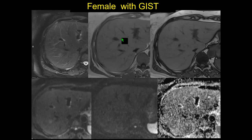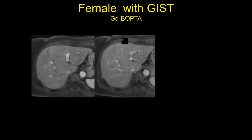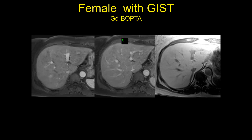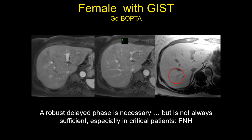A female with GIST had a lesion — not clearly seen on T2, without much restricted diffusion, but hypervascular without washout. With dynamic imaging alone, can we be certain these are benign lesions? Not really. In the hepatobiliary phase, the lesion disappears — confirming a small FNH — which can occur in these patients. For critical oncological patients, the hepatobiliary phase is very important to achieve a correct diagnosis.